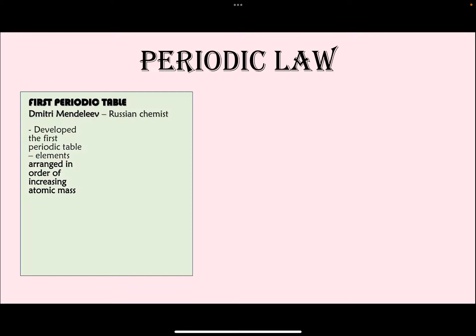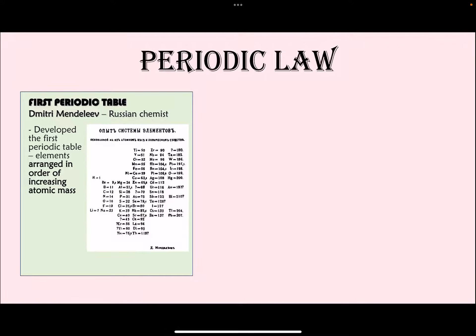We'll look at what the organization looked like in the past and what it looks like today. The first ever periodic table was given to us by Dmitri Mendeleev, who was a Russian chemist. Mendeleev organized the periodic table based on increasing atomic mass, and this is what the historical periodic table looked like.